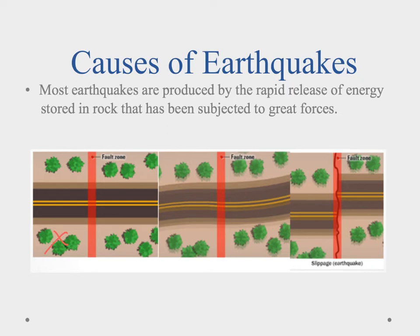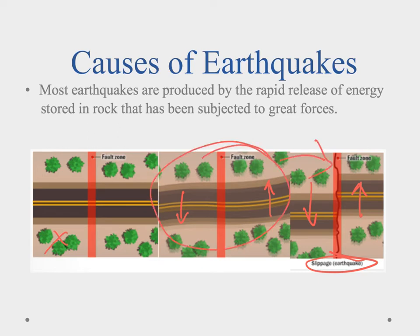In the second illustration we notice there is movement — this plate is moving one way, this one is moving the other way. We see that bending in the road, like stretching a rubber band, putting a lot of energy there. Then suddenly we have slippage — this plate shifts one way and the other shifts the opposite way. That's what causes an earthquake: the buildup of pressure and then the sudden release.